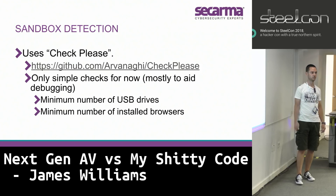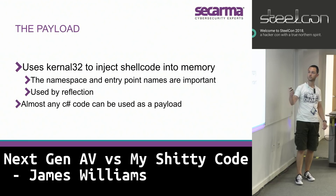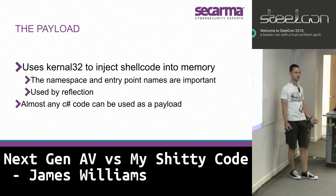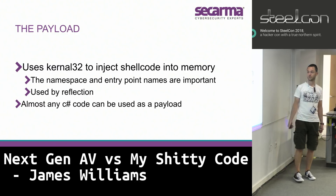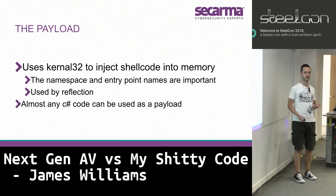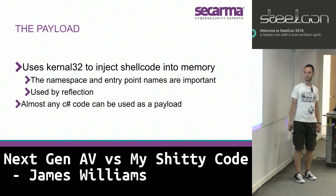You just grab extra code from checkplease and add it into the program. The payload - Google how to run Meterpreter with shellcode in C-sharp and you will find the same blog post that I found when I stole this. It uses kernel32, takes the shellcode that comes straight out of MSF Venom with a bit of encoding, injects it into memory, and that's it.